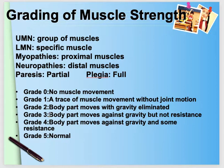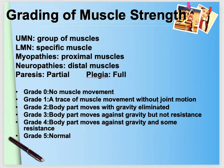Grade 3 is when the body part moves against gravity but with no resistance — for example, if you ask the patient to raise their leg from the bed, they can, but if you apply a little resistance they cannot. Grade 2 is movement only with gravity eliminated — the patient can slide the leg on the bed but not raise it. Grade 1 is when there is no movement but you can see a trace of muscle twitching — the joint is not moving. Grade 0 is no muscle movement at all.